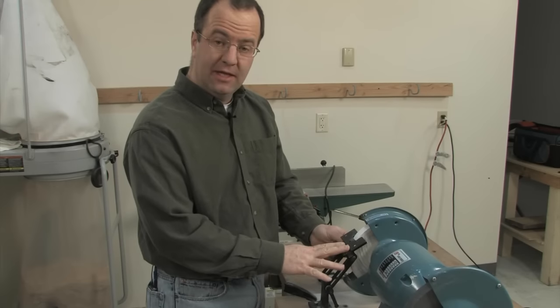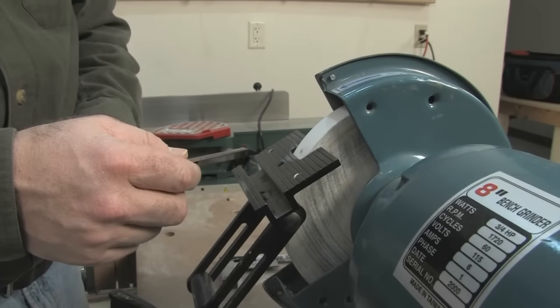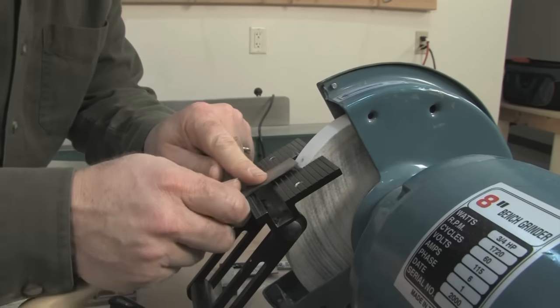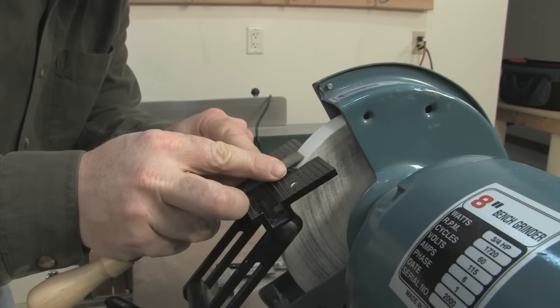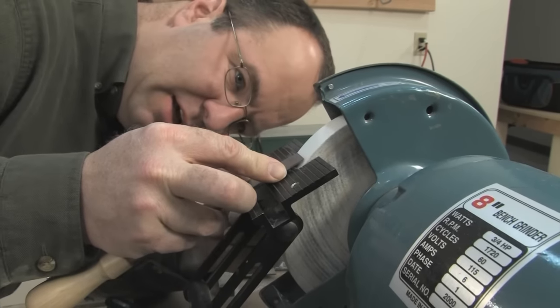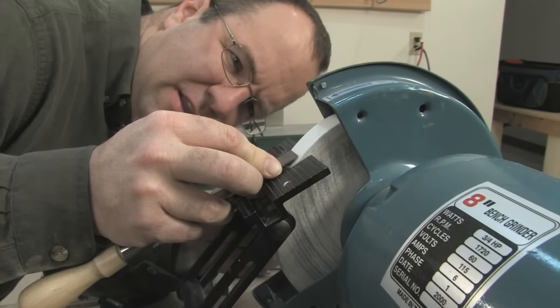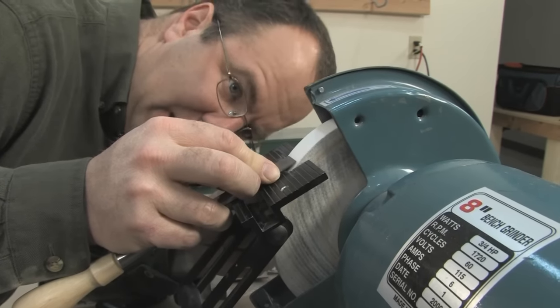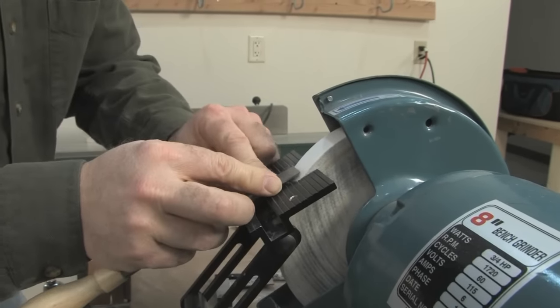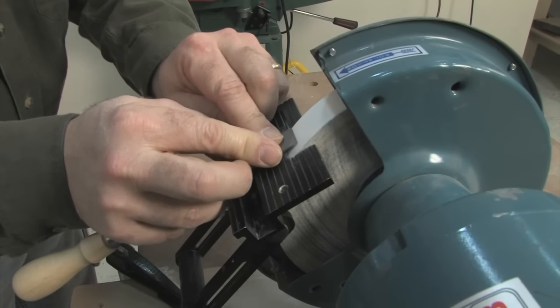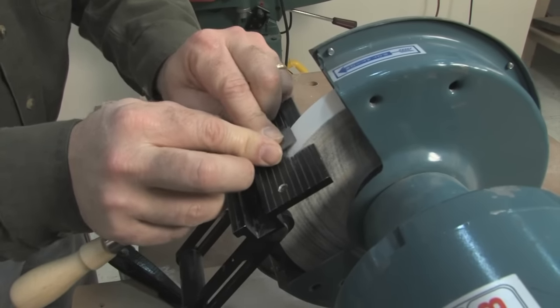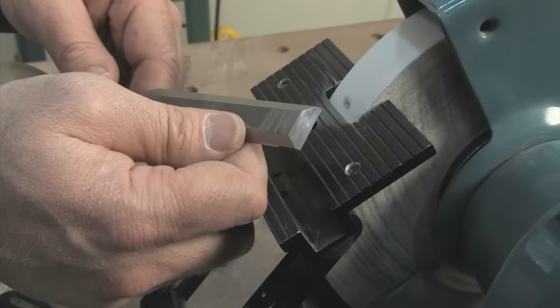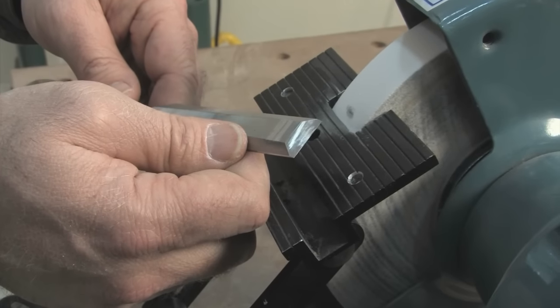But first we have to readjust the angle of this tool rest. So if you're already happy with the angle your chisel is ground at, you can just match that by laying the chisel on the rest, adjusting it slightly, and getting down low and taking a look. You want the wheel to hit the bevel about halfway along its length. What you can do is slide it up to the wheel when you think you're close and rub it back and forth, and then flip it over and take a look at the scratch pattern. It should be somewhere near the center of the bevel.